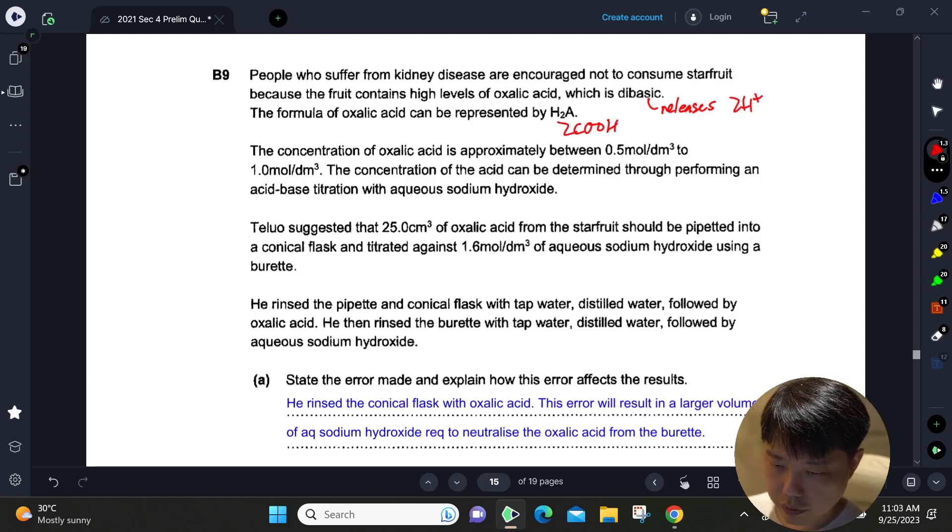The concentration of this oxalic acid is between 0.5 mol/dm³ to 1 mol/dm³. The concentration can be determined by performing a titration with sodium hydroxide. A student suggested that 25 cm³ be pipetted into a conical flask and titrated against 1.6 mol/dm³ sodium hydroxide using a burette.